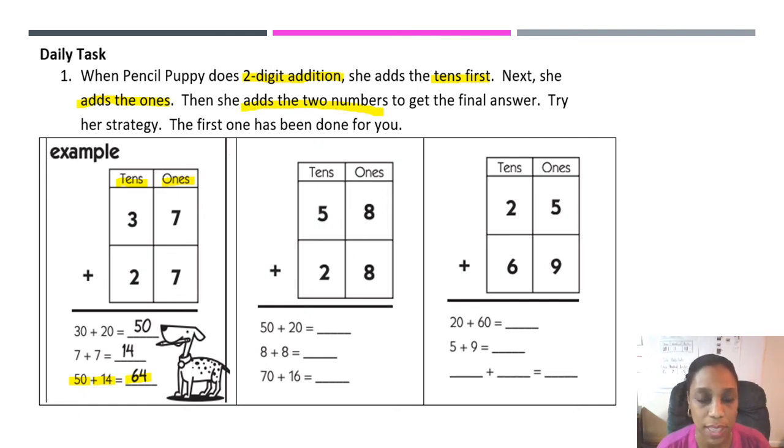Now let's try one together. Remember, we're going to use Pencil Puppy's strategy. Step one, we're going to add the tens. So the problem is 58 plus 28. Remember, we're going to start in the tens. So 5 tens is 50, and 2 tens is 20. So 50 plus 20 equals 70.